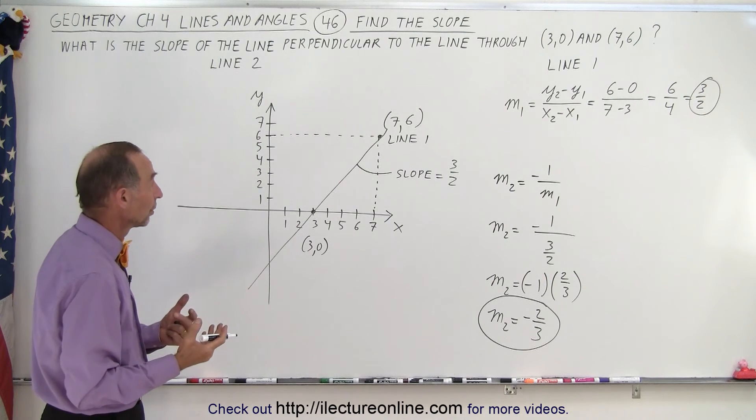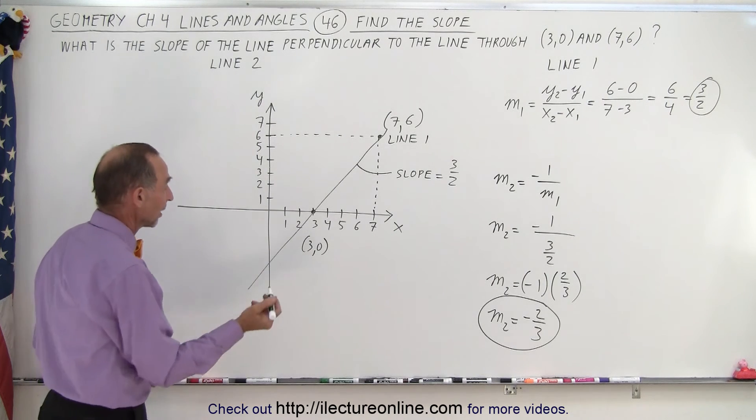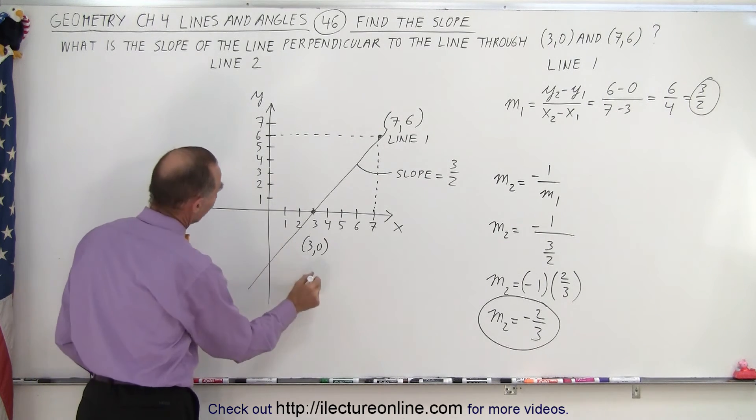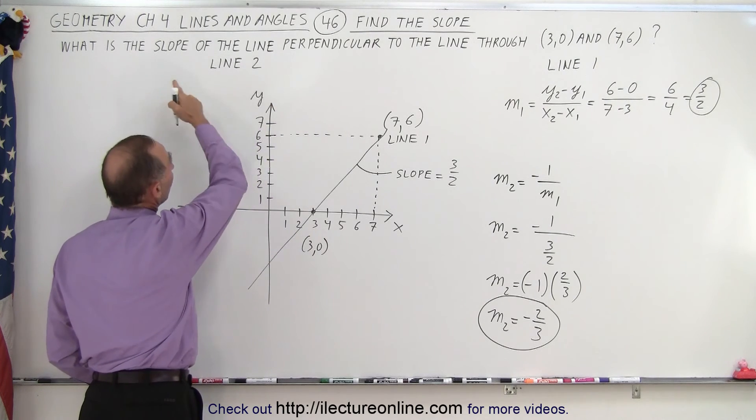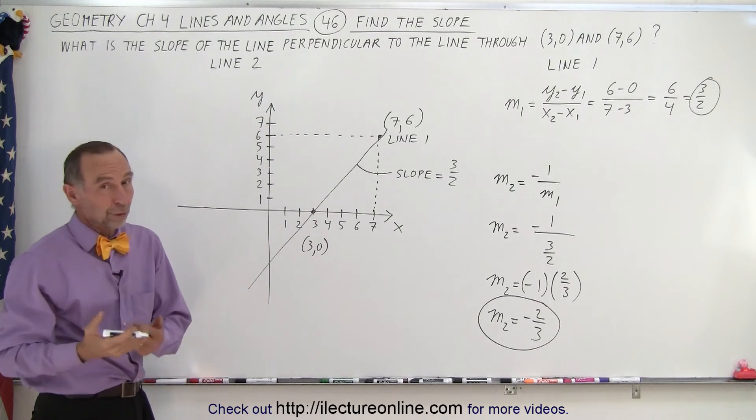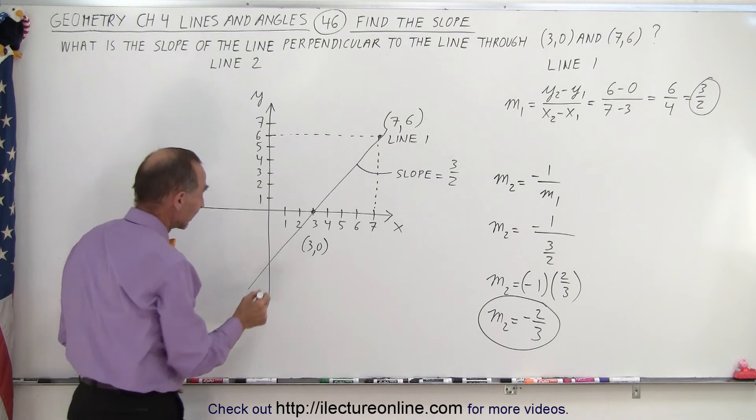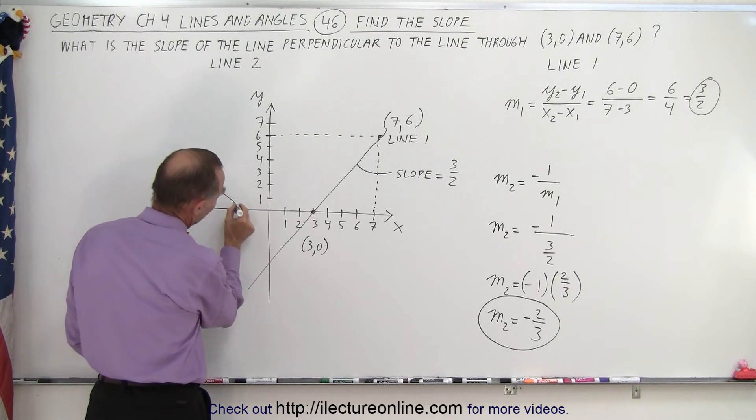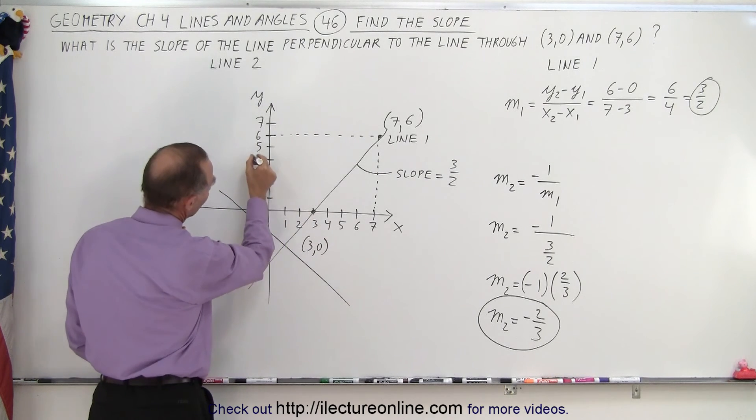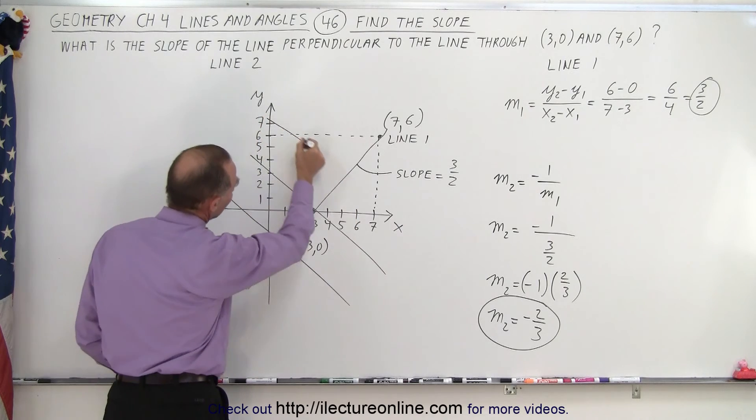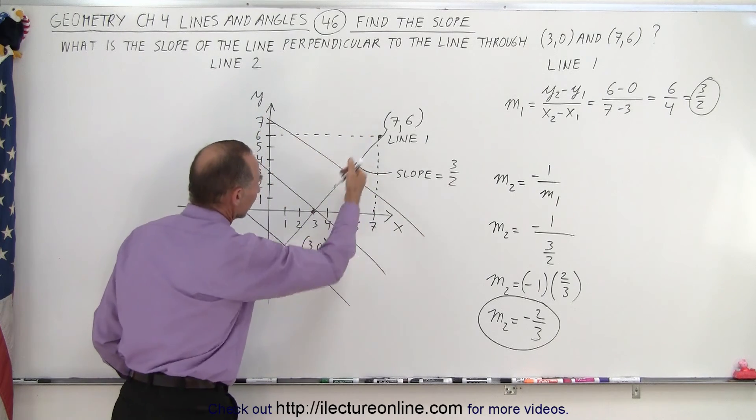So now we're looking for the slope of a line that's perpendicular to that. Now that could be any line. It could be this line right here. It doesn't tell us what point the line goes through, so we don't know what the line looks like, except that we know that it's perpendicular, which means it could be this line, or this line, or this line. Any of these lines are perpendicular to line 1.